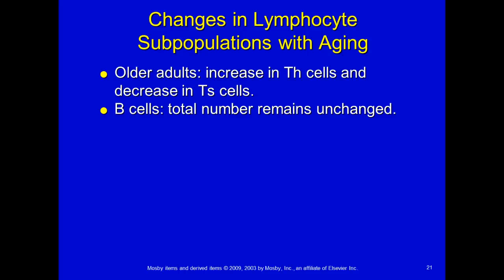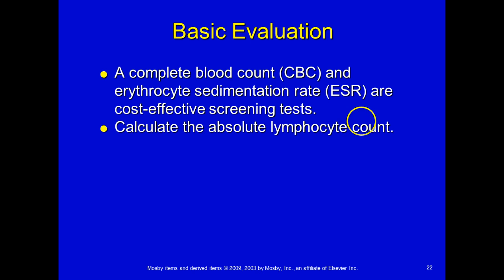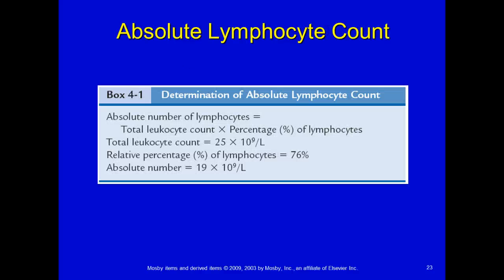Some changes with lymphocytes as you get older: in older adults there is an increase in T helper cells and a decrease in T suppressor cells; B cells usually remain unchanged. We can do a complete blood count and an erythrocyte sedimentation rate to see how many lymphocytes there are. The absolute lymphocyte count is done by taking the total number of WBCs times the percent of lymphocytes, which gives you an absolute number — more important to know than the relative number.